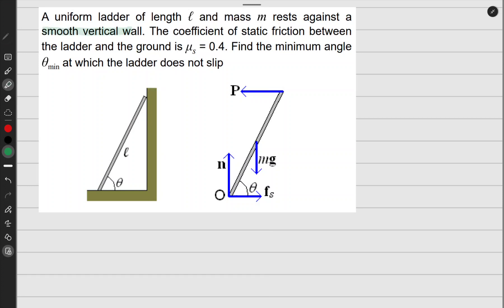And also the coefficient of static friction—they give us static because we want it not to move—between the ladder and the floor, the friction here is given by this value. Find the minimum angle at which the ladder does not slip.